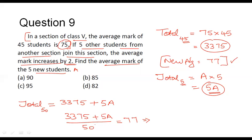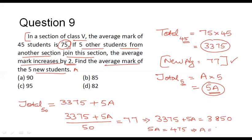We can simplify this expression to get the value for A. So 3,375 plus 5A equals 77 into 50, which is 3,850. From this, 5A equals 3,850 minus 3,375, and that value comes to 475. Therefore A equals 475 divided by 5, which is equal to 95. Thus the average mark of these 5 new students is A equals 95. Option C reads 95, and that is the final answer.